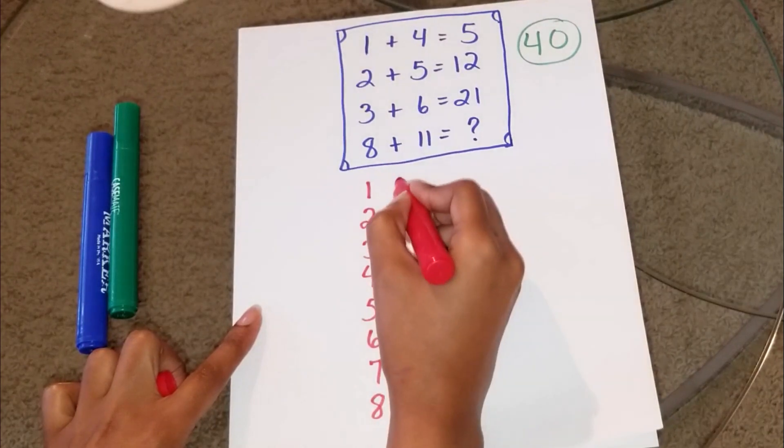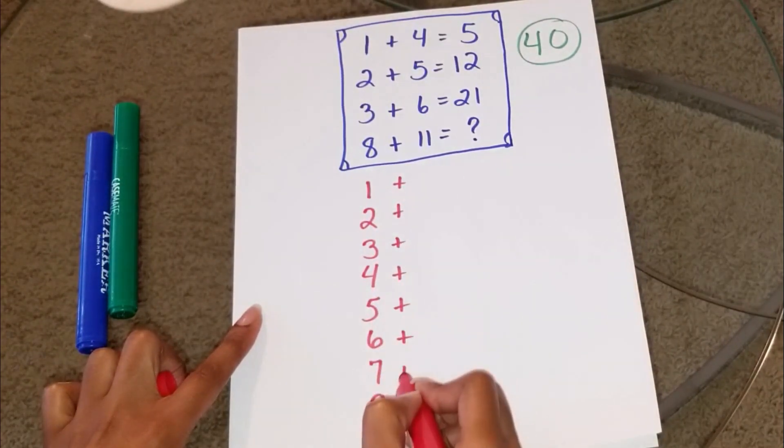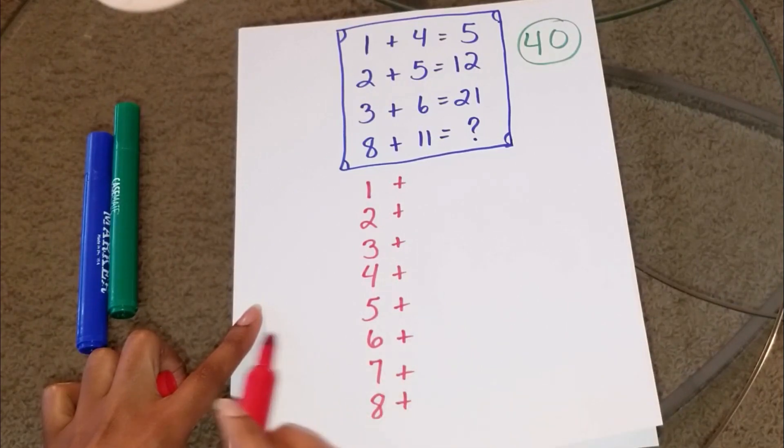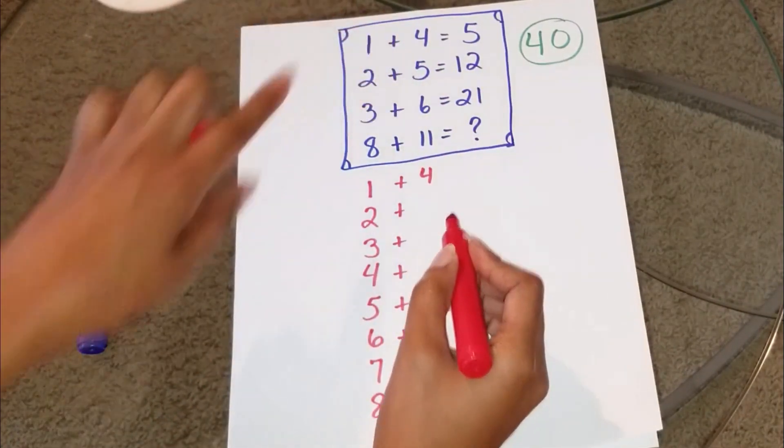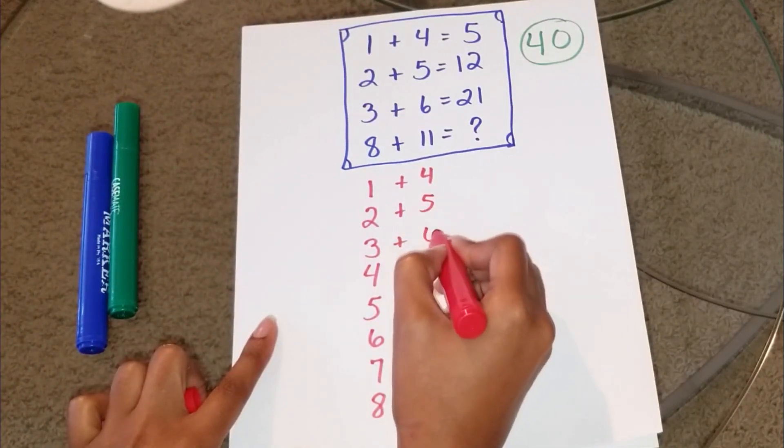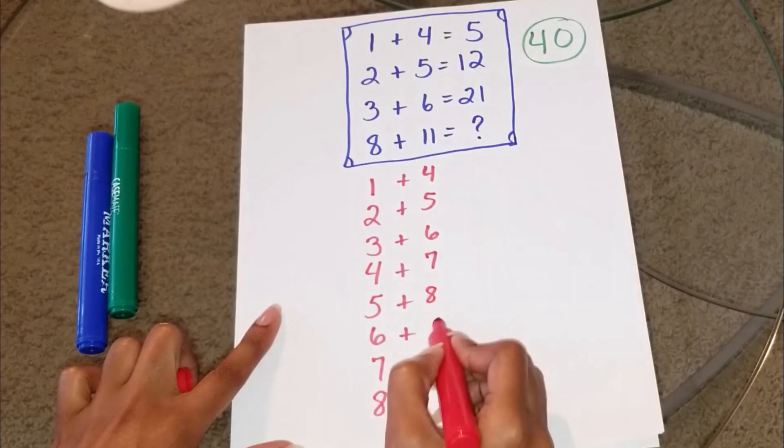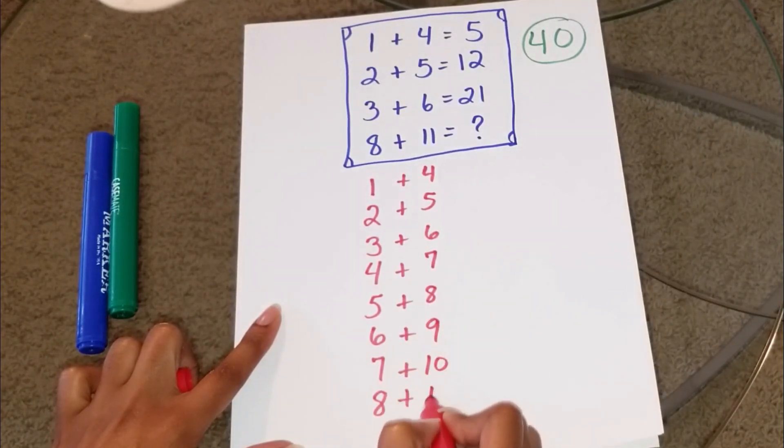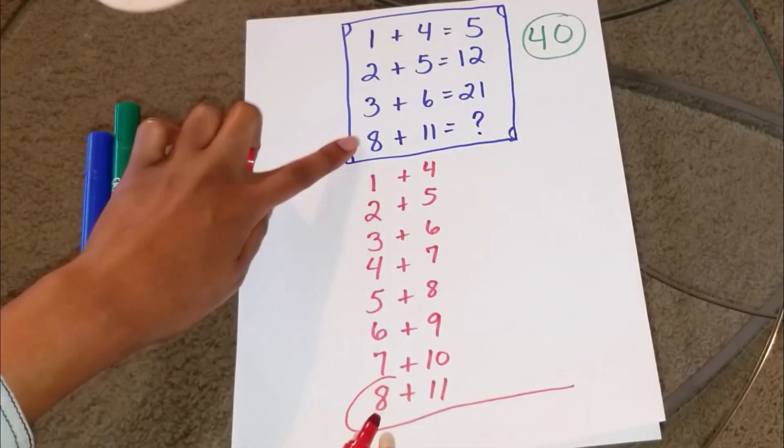Of course, we still have our plus signs. We're going to keep going. 4. Well, this line starts over, right? 4, 5, 6. Keep going with that pattern. 7, 8, 9, 10, 11, right? Finally, get down to the bottom. This is how they got the 8 plus 11, right?